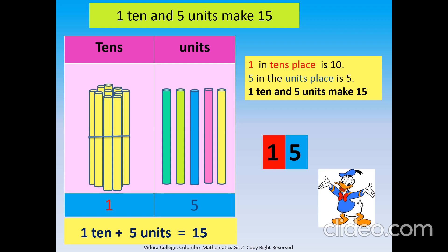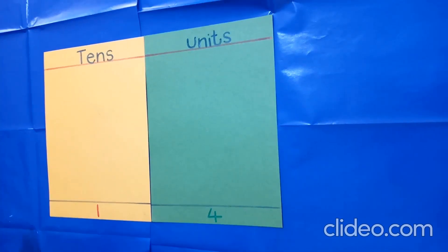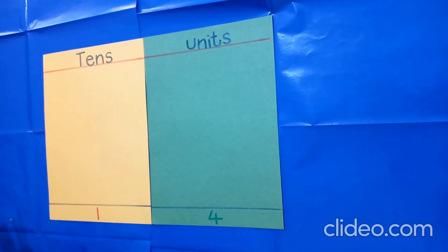Children, remember when we write two digits number, we write tens first, then units. That means tens on your left and units on your right.